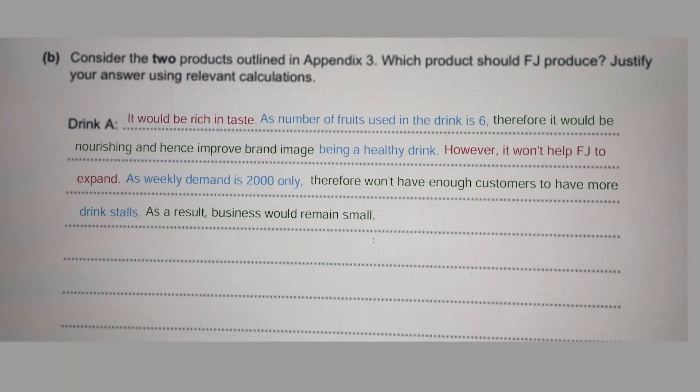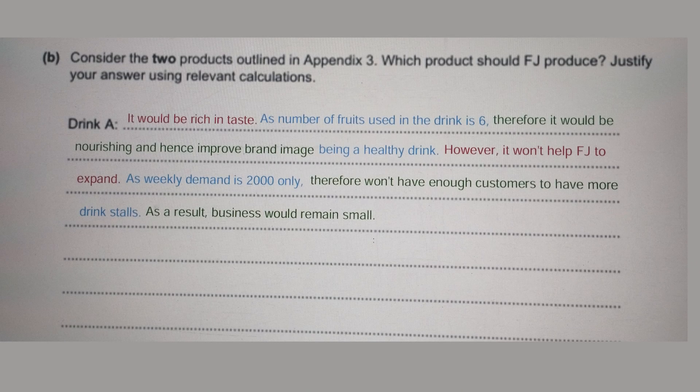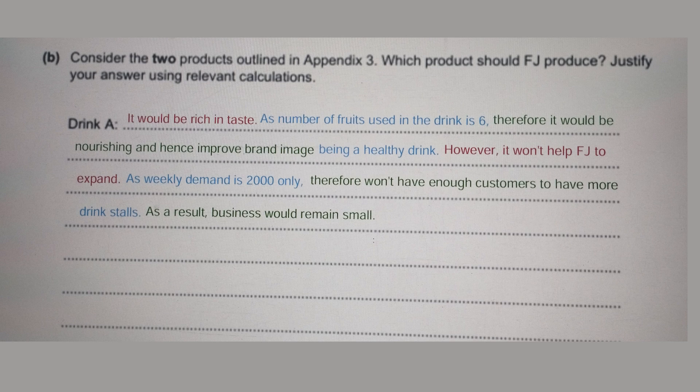Now let's look at the written answer. The question is: 'Consider the two products outlined in Appendix 3 — which product should FJ produce? Justify your answer using relevant calculations.' It's a 12-mark question: two marks for knowledge, two for application, and the rest for analysis and evaluation. Red color is used for knowledge, blue for application, and green for analysis.